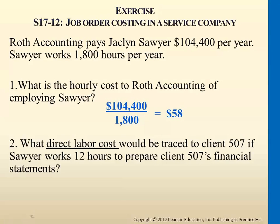I'll give you a minute to do this. The per hour rate is $58, and the total hours devoted to this particular client's job is 12 hours. So you just multiply them — you get $696. This is the direct labor cost part.